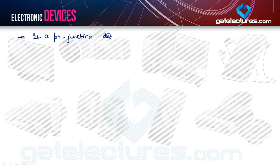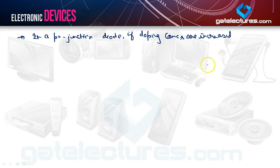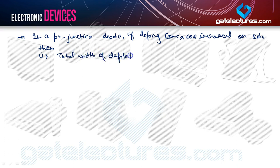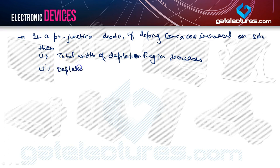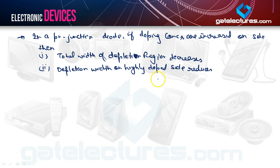In a PN junction diode, if doping concentration is increased on one side, the total width of the depletion region decreases. The depletion width on the highly doped side reduces, and the depletion width on the lightly doped side increases.